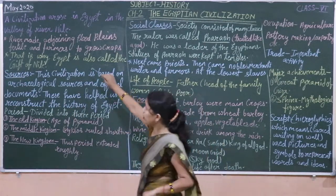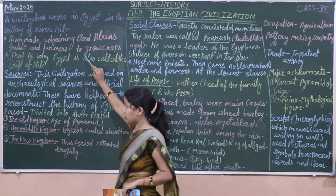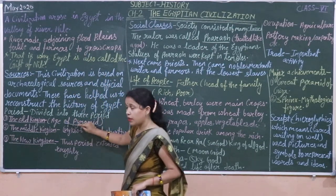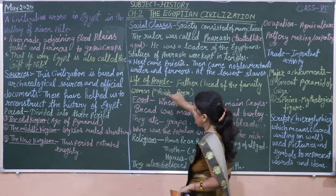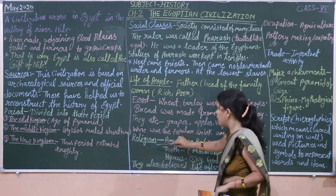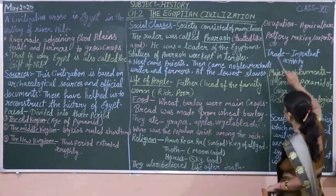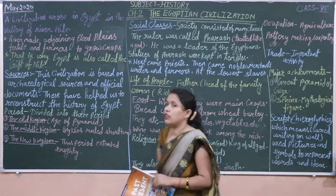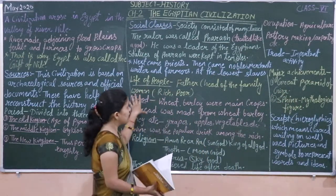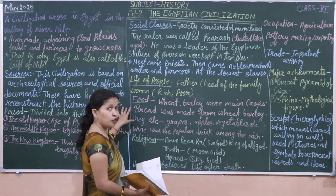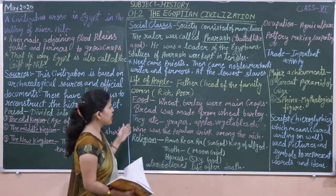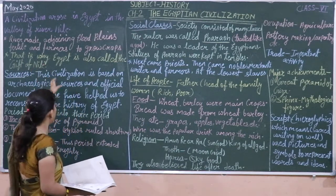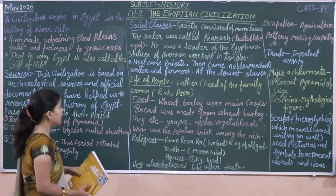In the main chapter we learned about the Egyptian civilization — how many periods they are divided into, social classes, life of people, food, religion, occupation, trade, achievement, and so many things. This Egyptian civilization is a whole portion. Which river? The Nile river. This is the gift of the Nile river. Thank you.